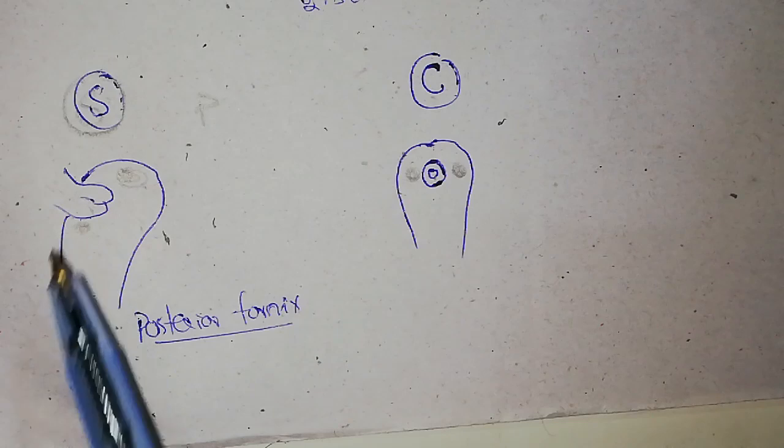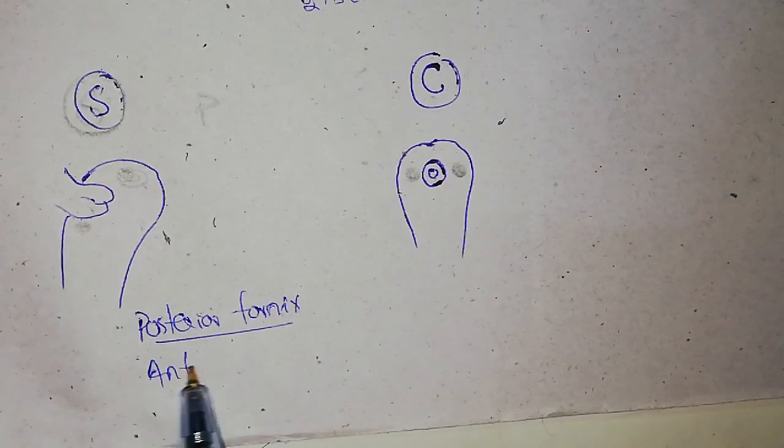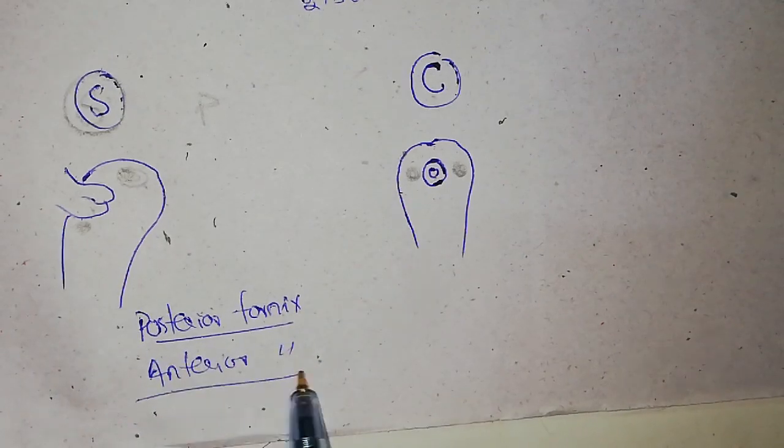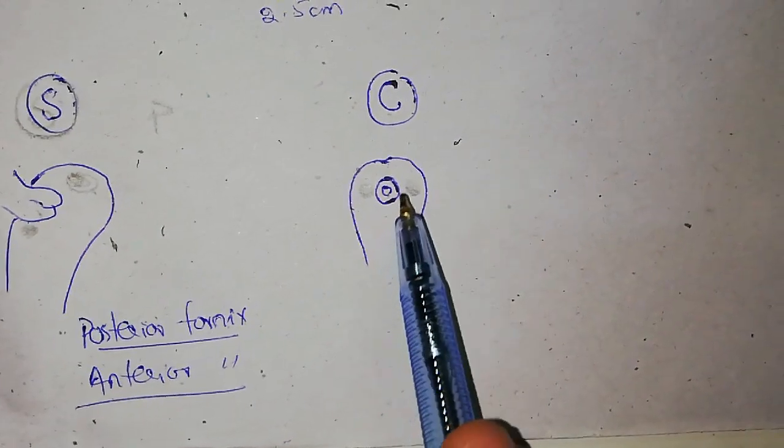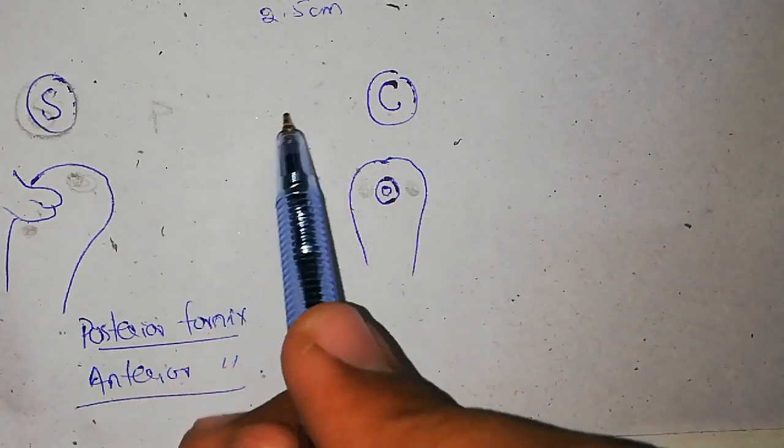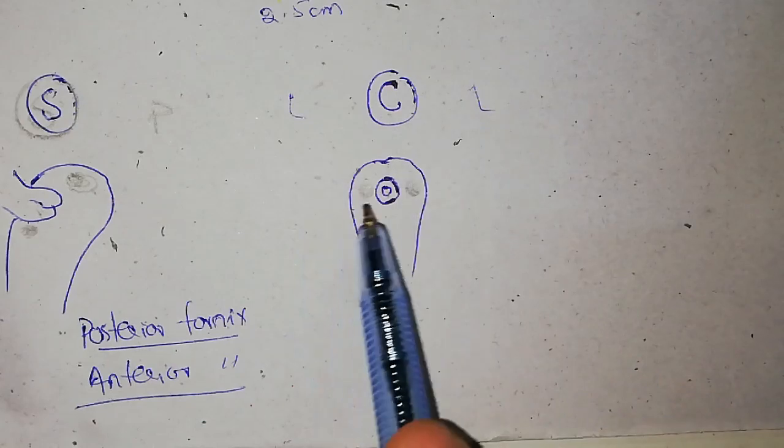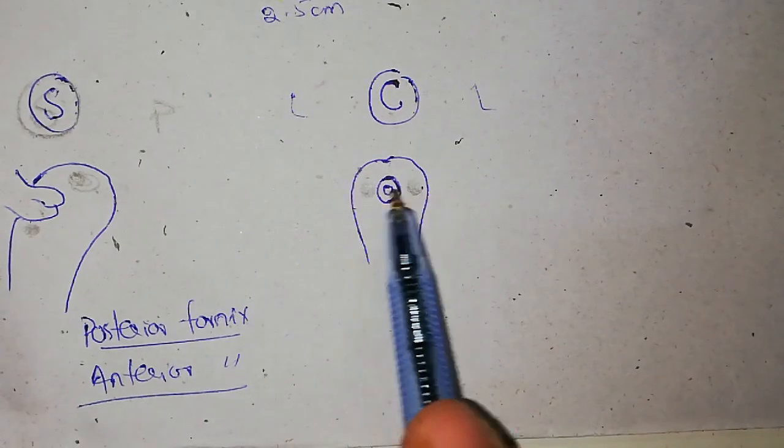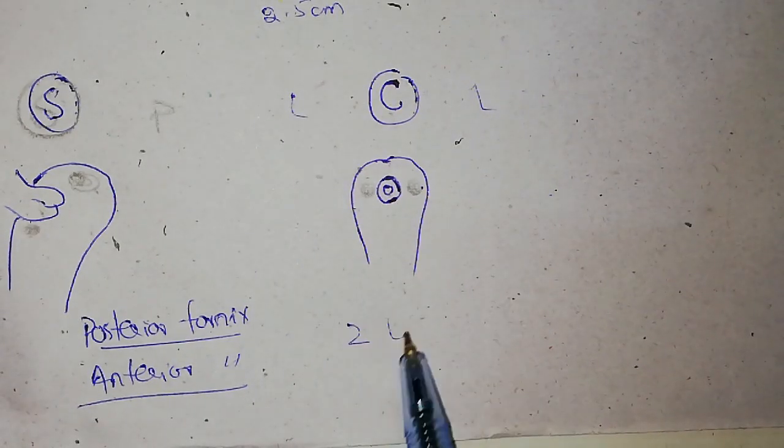Anteriorly we can also see a space. This is called the anterior fornix of vagina. It is the smallest. In coronal section we can see these two lateral sides, so we can see two lateral fornix of vagina.